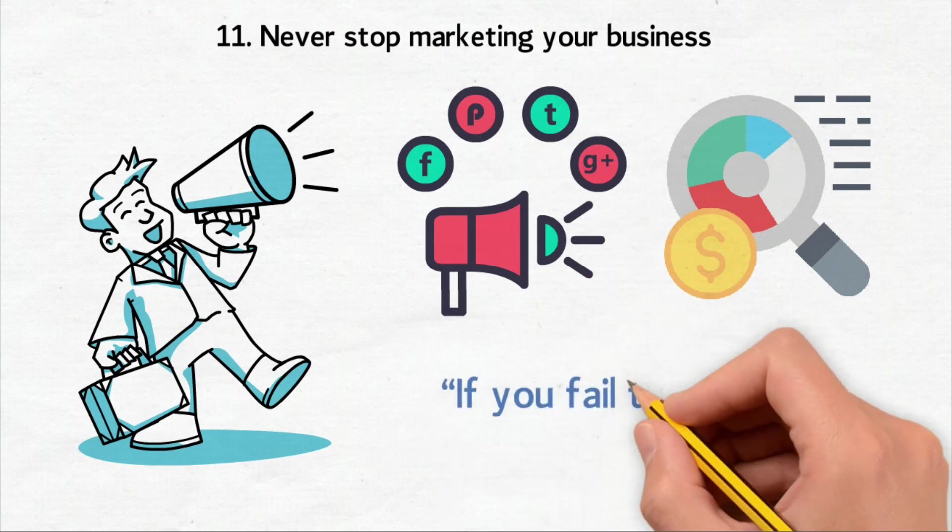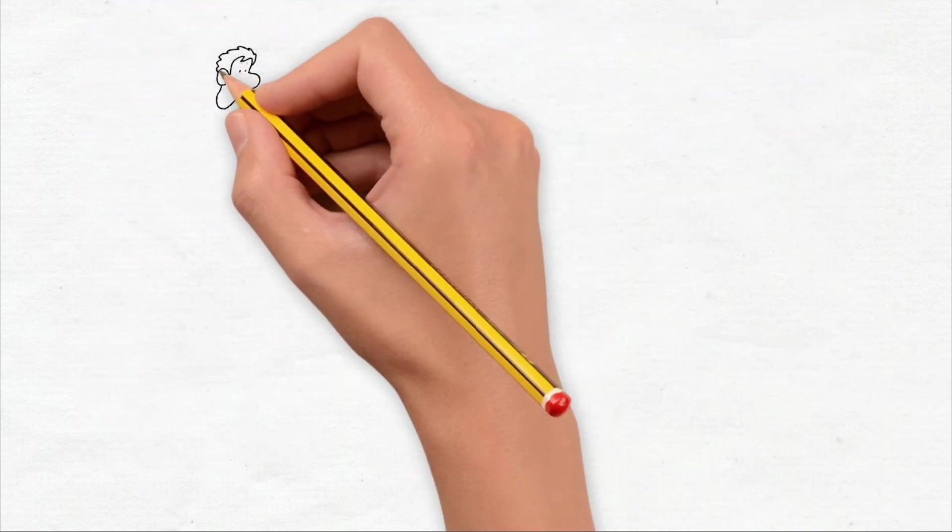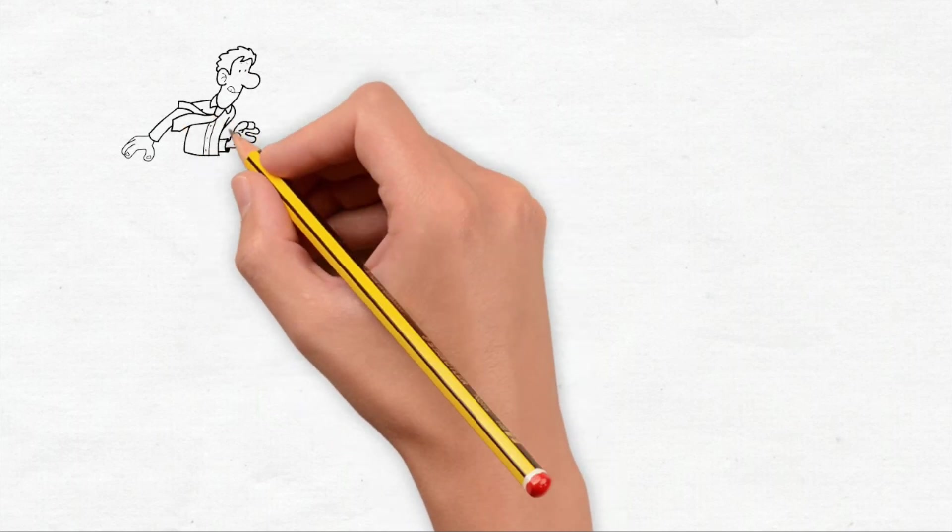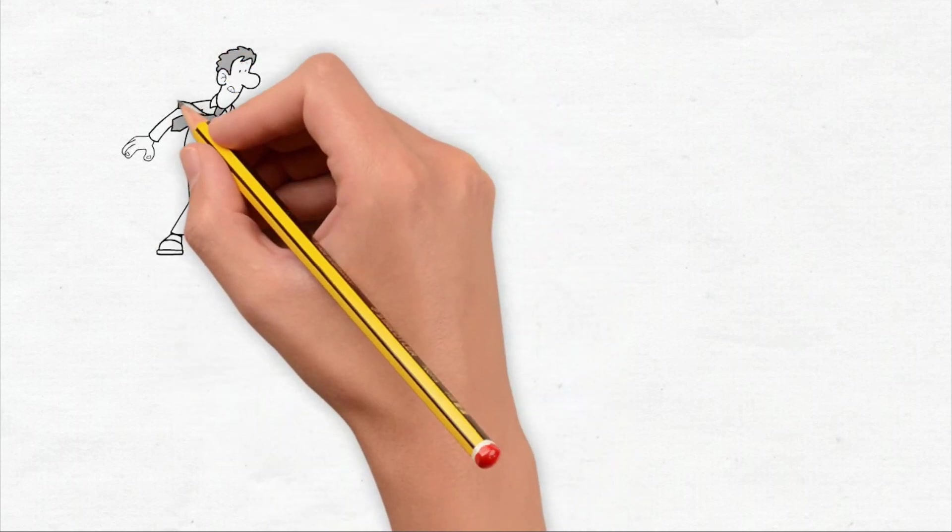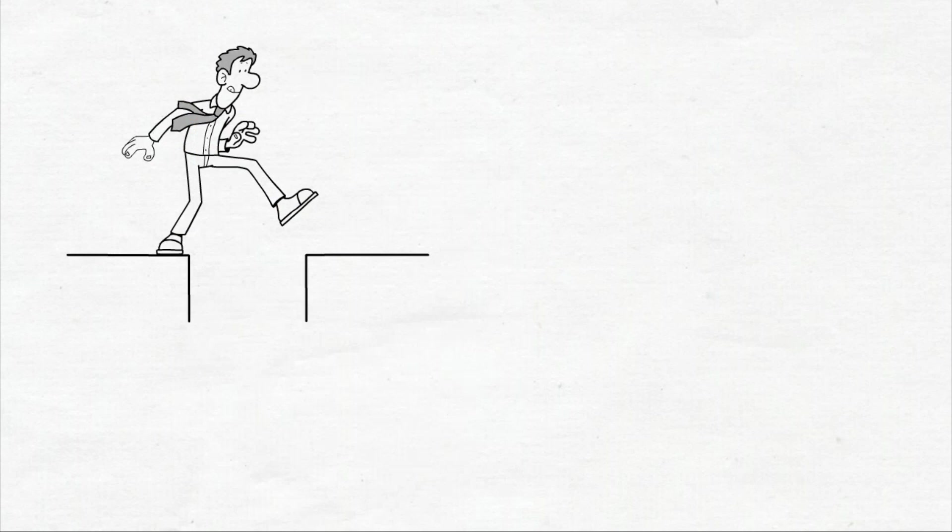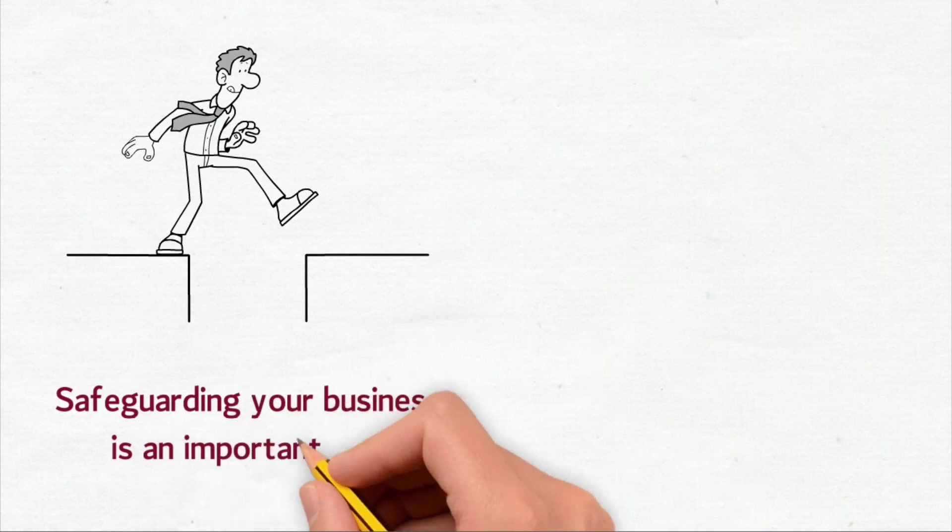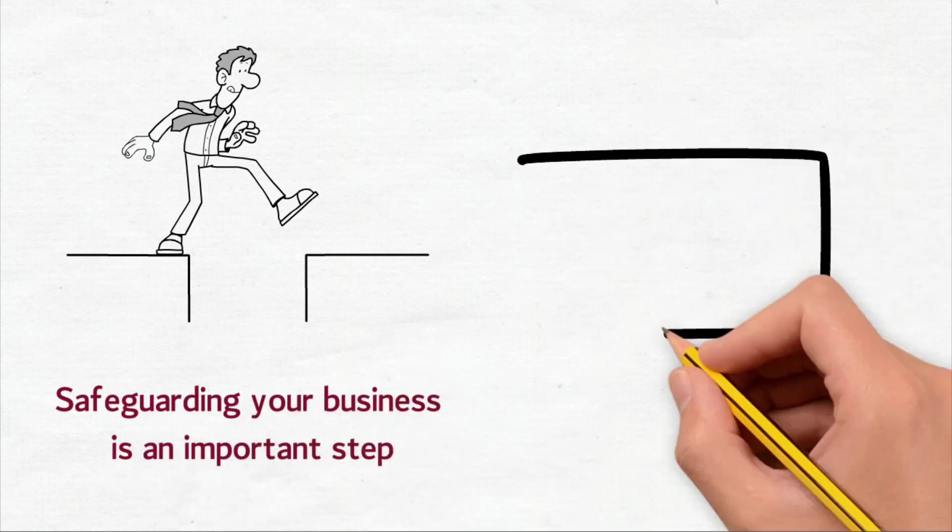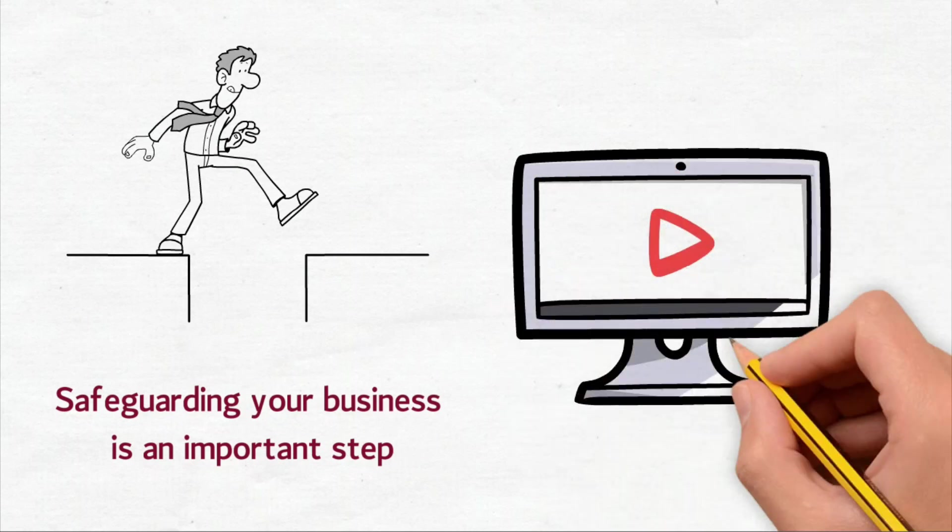Remember, if you fail to plan, you are planning to fail. Being prepared is key to attaining success. Anticipating the worst and implementing measures to overcome hurdles will help your online business beat common challenges in the face of an economic recession. Safeguarding your business is an important step, and you can take another one by watching this next video to see when a recession might hit.